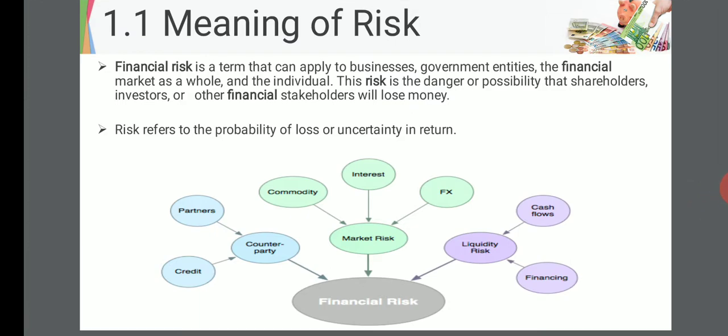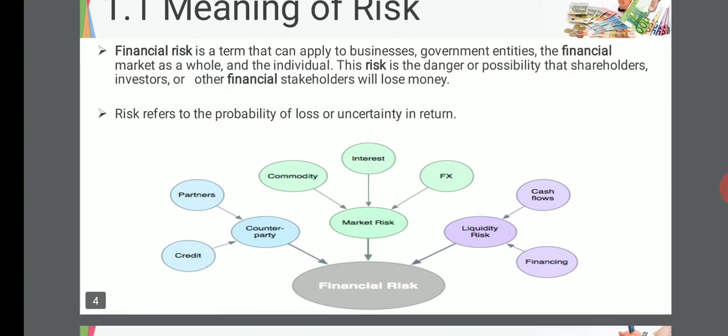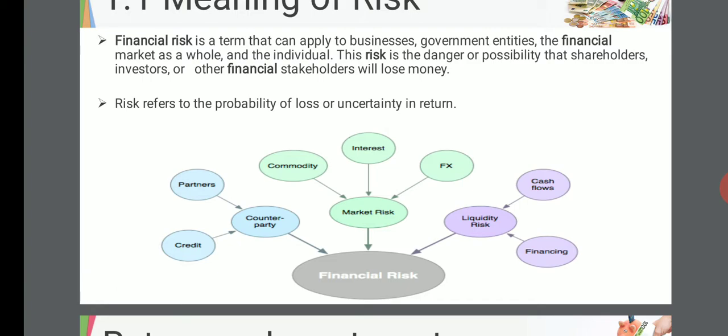Looking into financial risks, there are three types: counterparty risk, market risk, and liquidity risk. Counterparty risk has two subtypes: credit risk and partners risk. Market risk includes commodity risk, interest rate risk, and foreign exchange risk. Liquidity risk has two subtypes: financing risk and cash flow risk. Cash flow risk is the uncertainty of cash flows in the future.